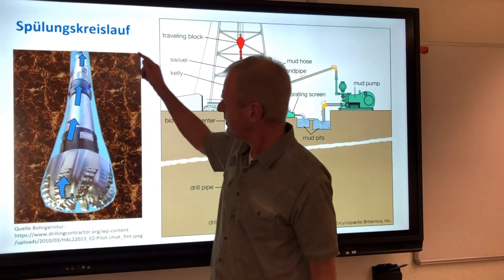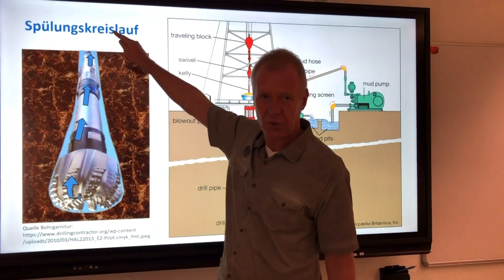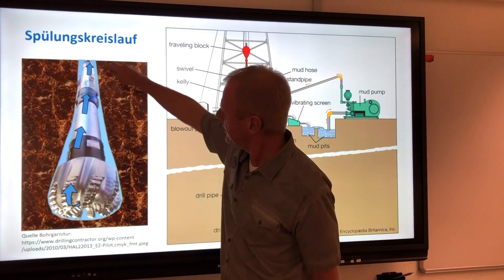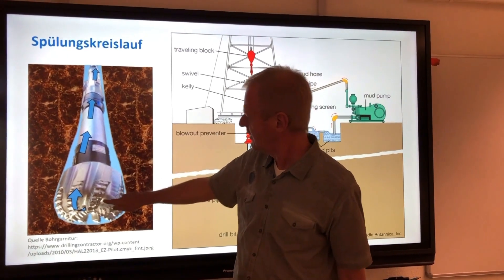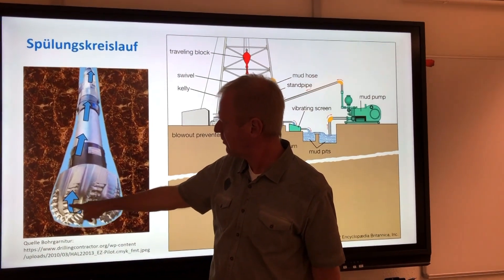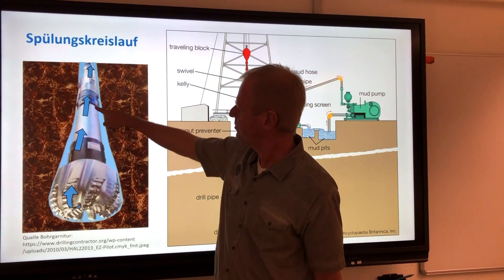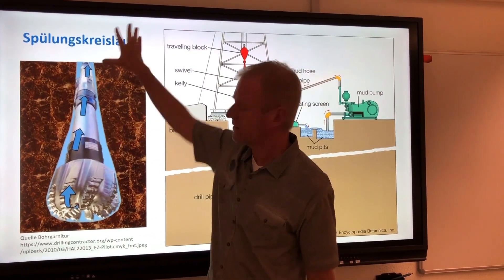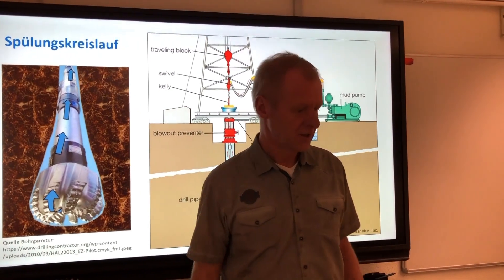So we pump a liquid, the drilling mud, through the entire drill string down to the bottom. The mud comes out of nozzles at the bottom and goes back up to the surface in the annulus between the drill string and the borehole. And in the process it carries the cuttings with it.